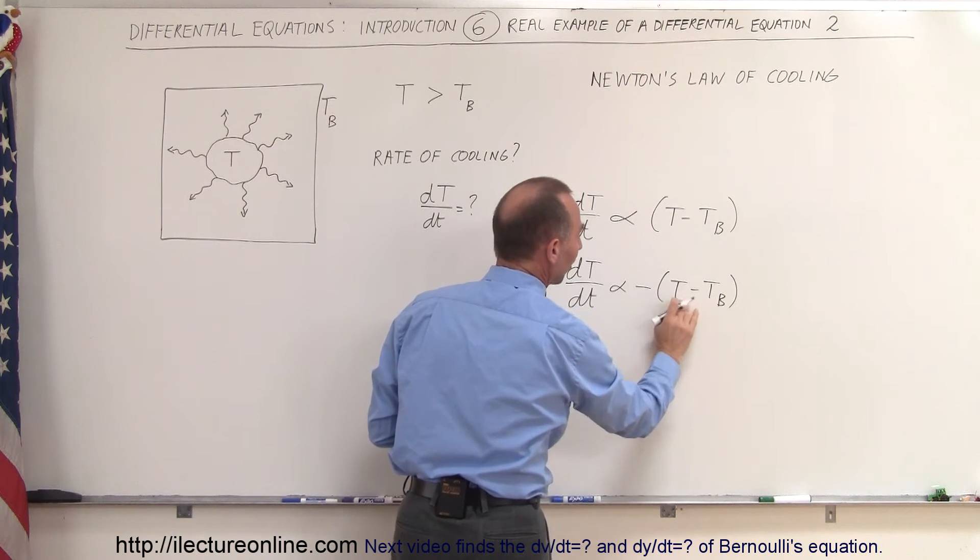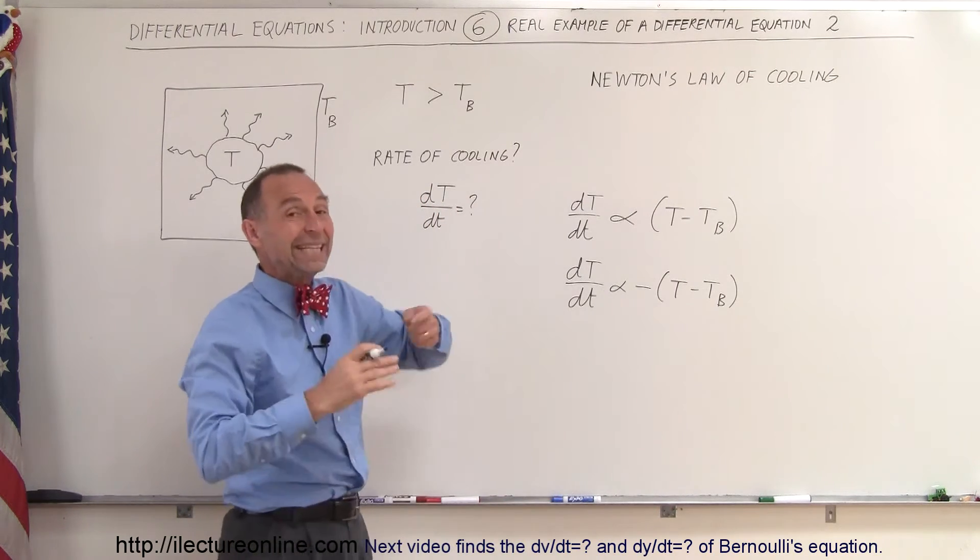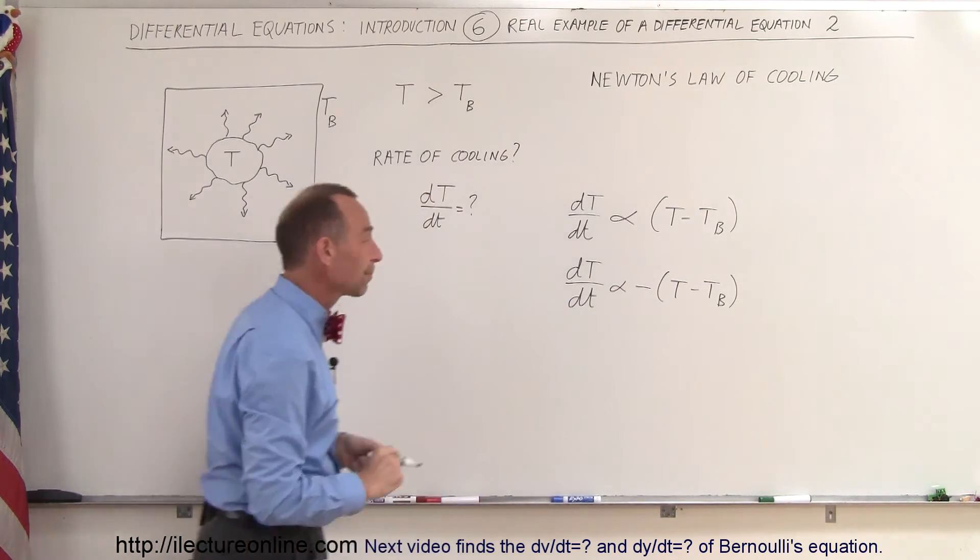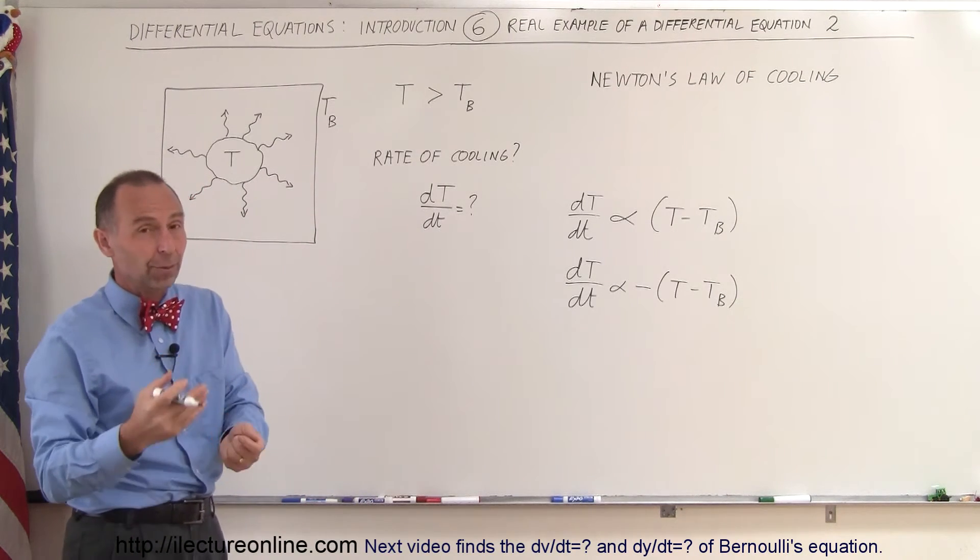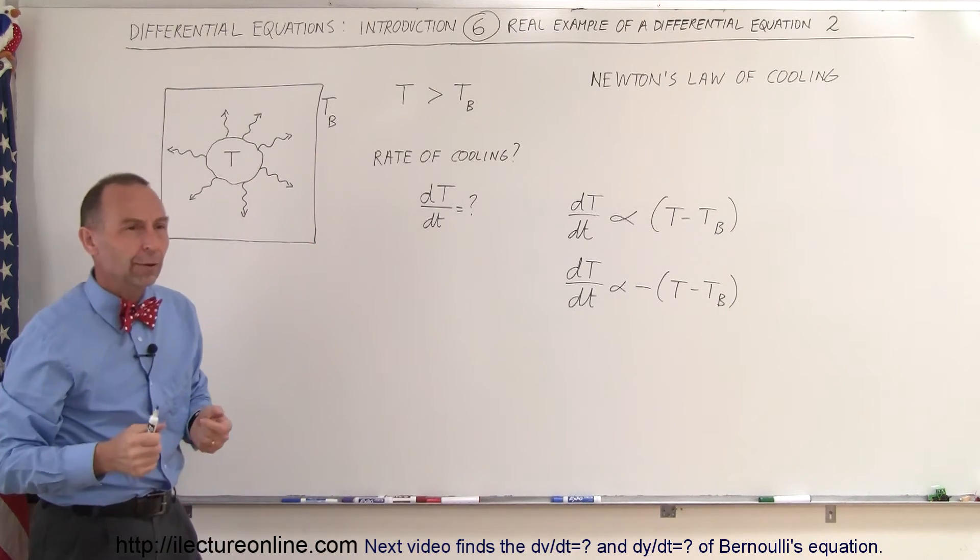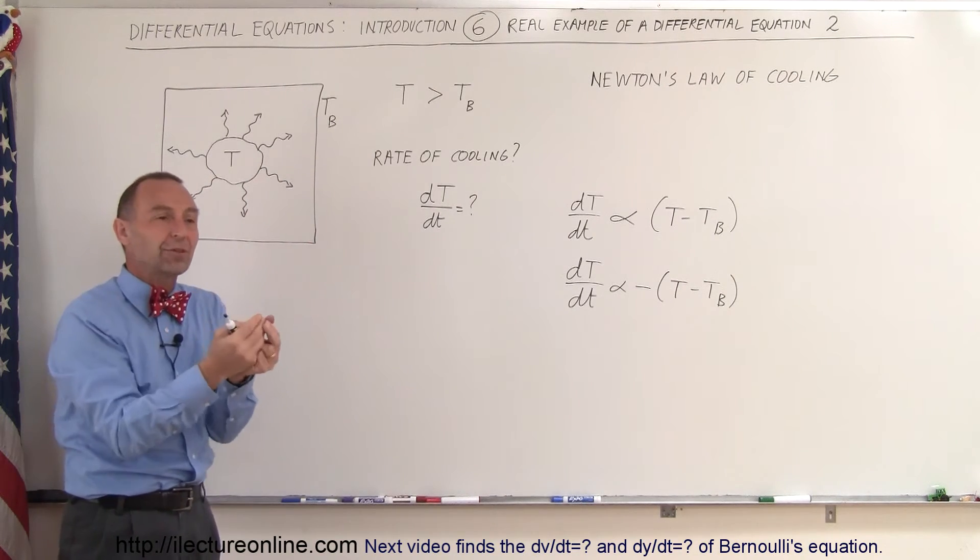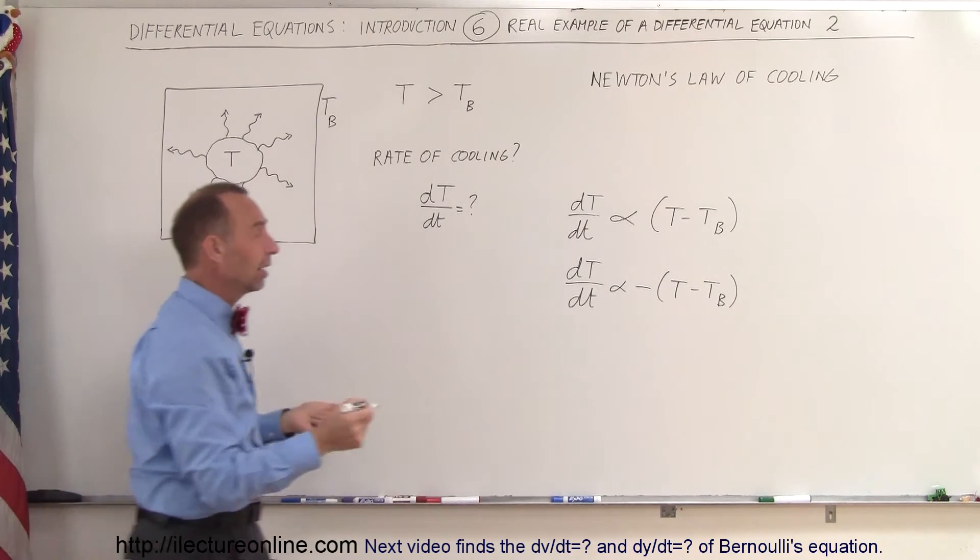In other words, if this is larger than this, the change in temperature would be negative because it is cooling. Alright, and so then to turn this into an equation, we need to have a constant of proportionality. And that depends on how easy the object can radiate out energy. That has to do with the emissivity of the object.